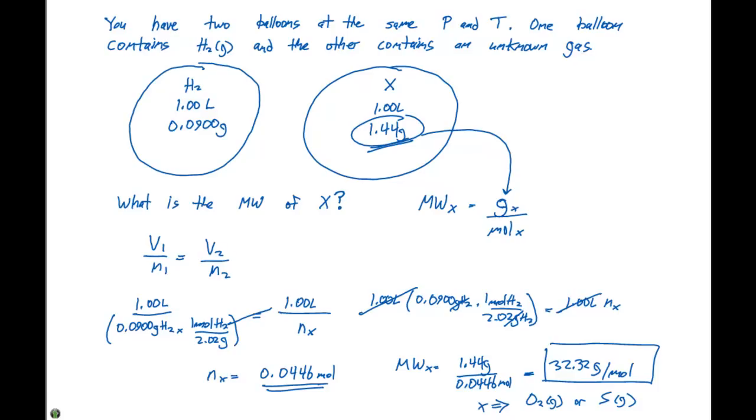So here first we determined what do we need in order to determine the molecular weight of our unknown. Molecular weight is in grams per mole. We're given the grams, we need to calculate moles. Then we went through, used Avogadro's law, set up the relationship, and we figured out the number of moles. Then we take the initial amount of grams divided by the number of moles to get our molecular weight here of 32.32 for this particular question.